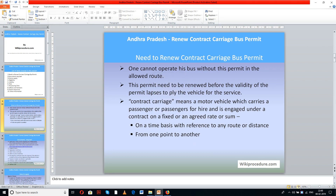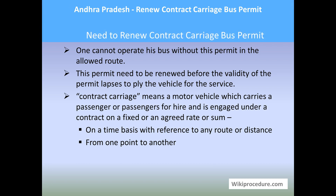Let us see the need to renew contract carriage bus permit. A contract carriage bus permit is a permit required by the vehicle owner in order to use the vehicle for transport of contracted people. For example, if it is a company, the vehicle will be used to transport employees from the premises to their residential areas. We commonly see this during busy morning schedules where people from different corporates wait for their company vehicle to come and pick them up.